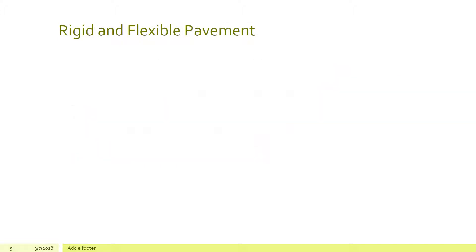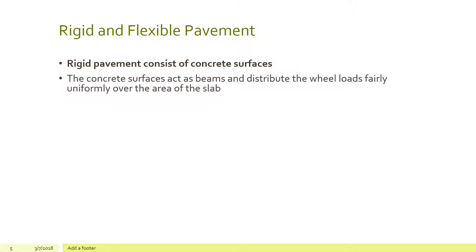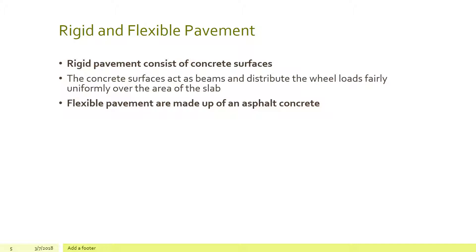Rigid pavement consists of concrete surfaces — we saw a lot of this during the Depression era when bridges and roadways were concreted. Concrete surfaces act as a beam and distribute wheel loads fairly uniformly over the area of the slab. Reinforcement — rebar or wire mesh, depending on design specifications — supports the slab so that truck and car traffic loading is distributed over the whole concrete slab or beam.